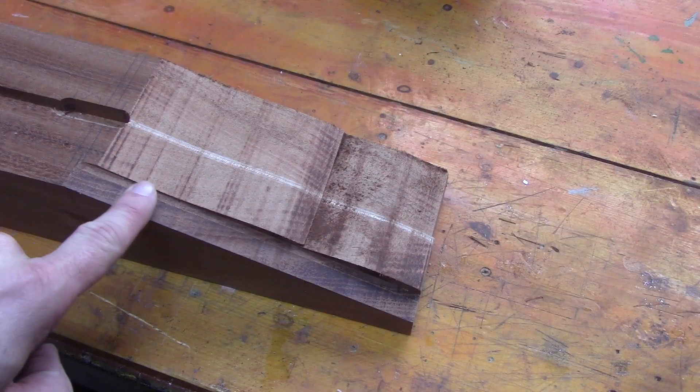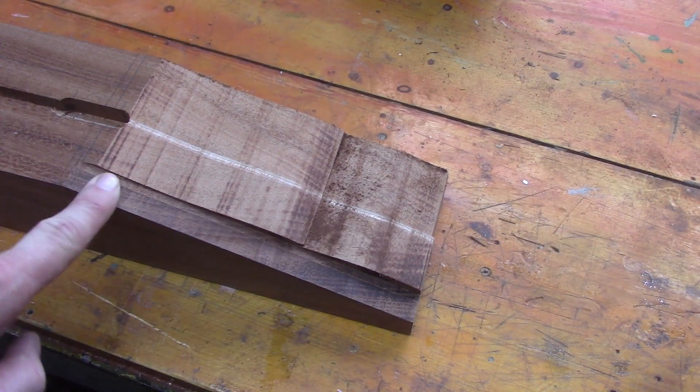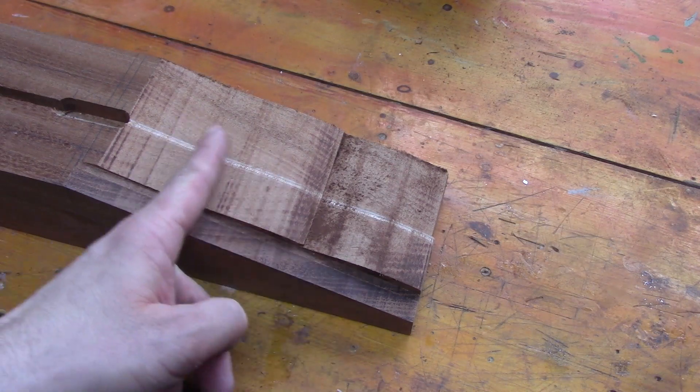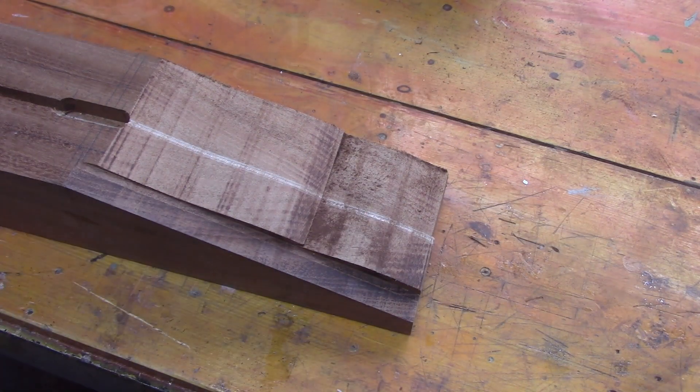So now we've got a nice flat square reference surface. We can use this with the Robo sander and the bearing can run along here, taking away the rest of this material and giving us a nice flat, clean surface to work on.